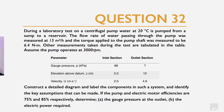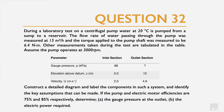Now we're going to look at a number of questions. During a laboratory test on a centrifugal pump, water at 20 degrees is pumped from its sump to its reservoir. The flow rate is given as 15 meters cubed per hour and the torque applied to the pump shaft was measured to be 6.4 Newton meters. Other measurements are tabulated, and the pump operates at 3,000 revs per minute.